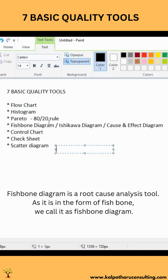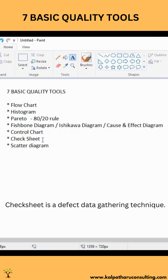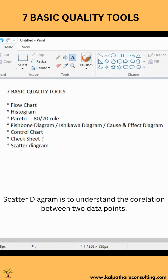Fishbone diagram, also called Ishikawa diagram or cause and effect diagram, helps you to identify the root cause. Control chart helps you to understand whether the process is within control. Check sheet is a defect gathering tool, and scatter diagram is the correlation between data points.